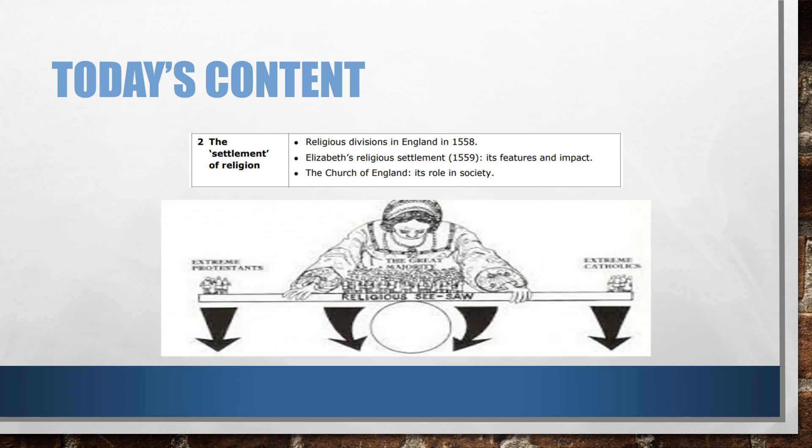In terms of the religious settlement we are looking at the idea of a religious seesaw, in terms of a compromise between the Catholics and the Protestants when Elizabeth became Queen in 1558.